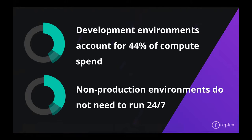Moving on to the next aspect of cluster performance — developer environments. Development environments account for 44% of compute spend. These environments don't need to run 24/7 — they're not production workloads. Most of them don't need to run on weekends or during off hours. In this section, we'll look at some native Kubernetes abstractions we can use to proactively monitor and control the resource consumption of development environments, ensuring these workloads are not up and running 24/7 by shutting them off during off hours, reducing resource wastage and spend.